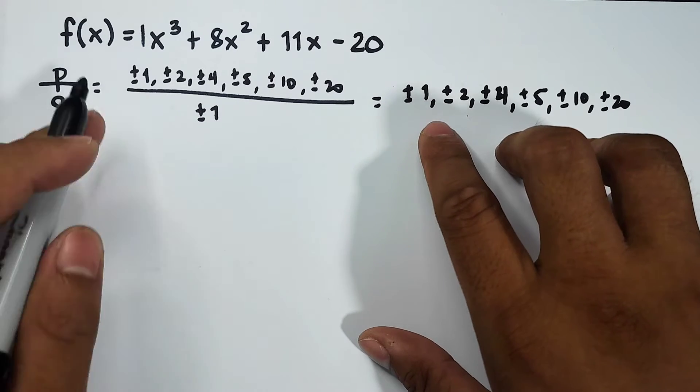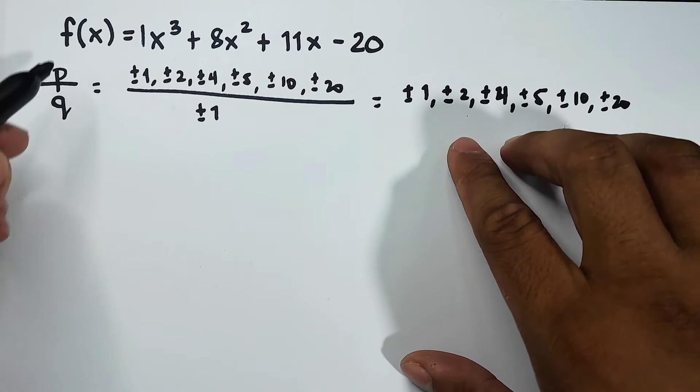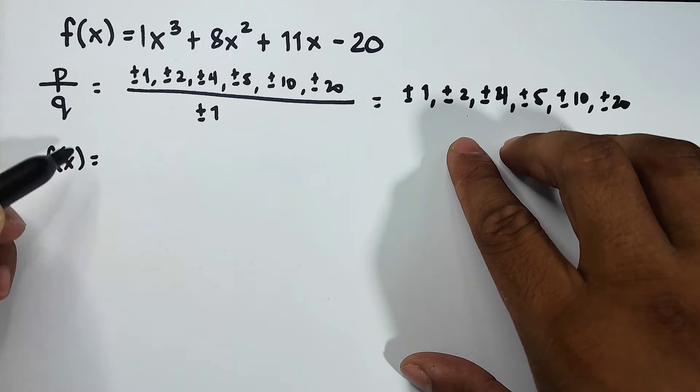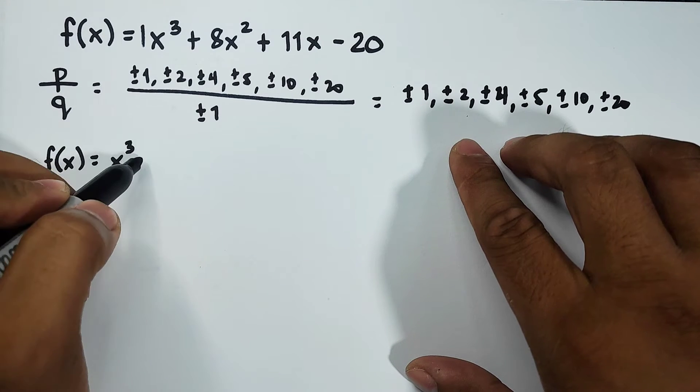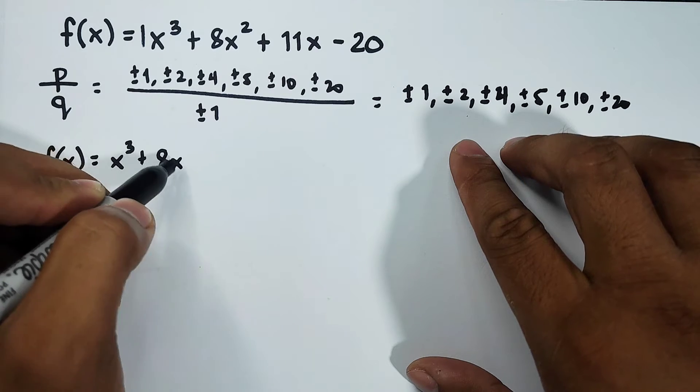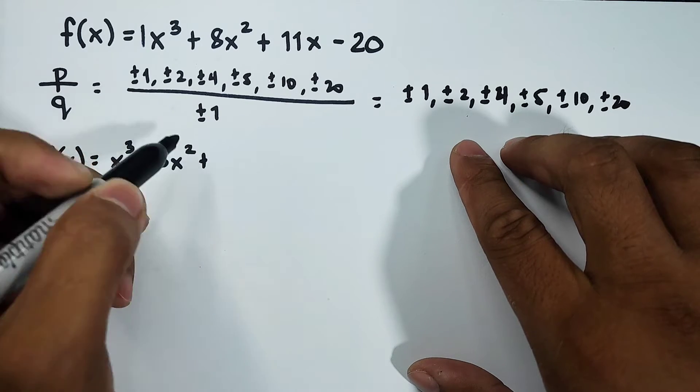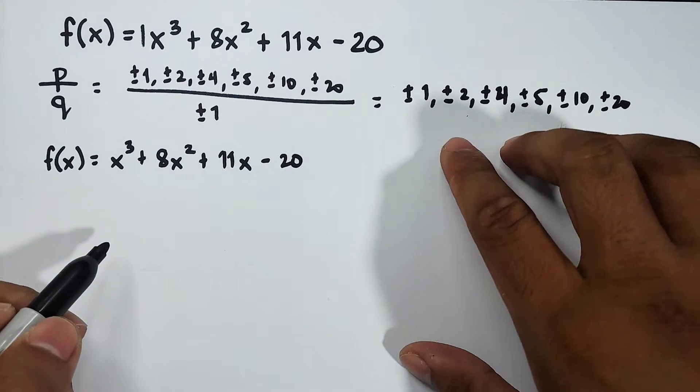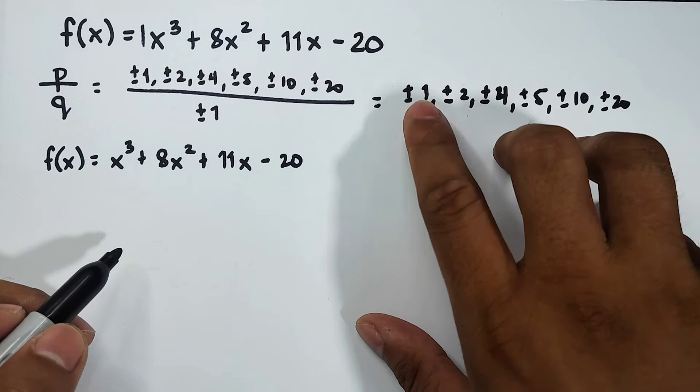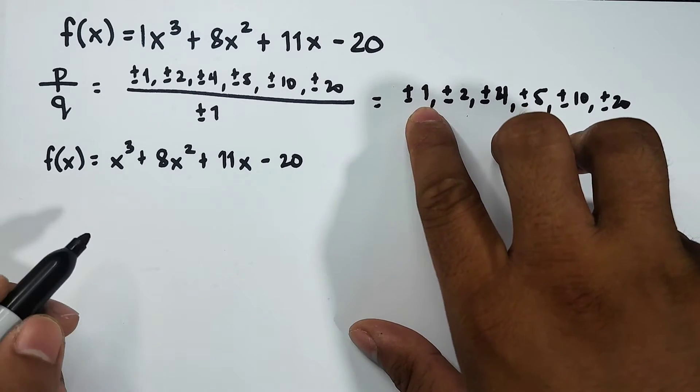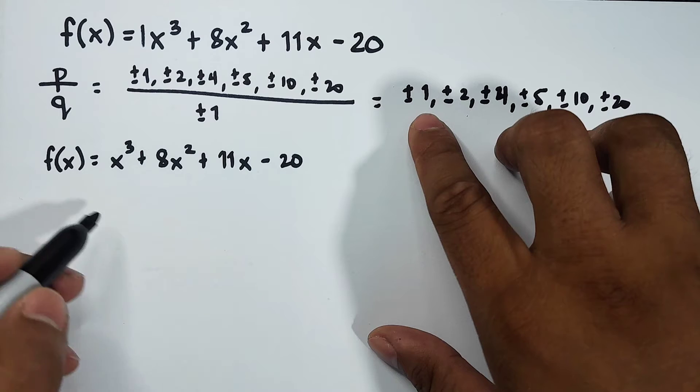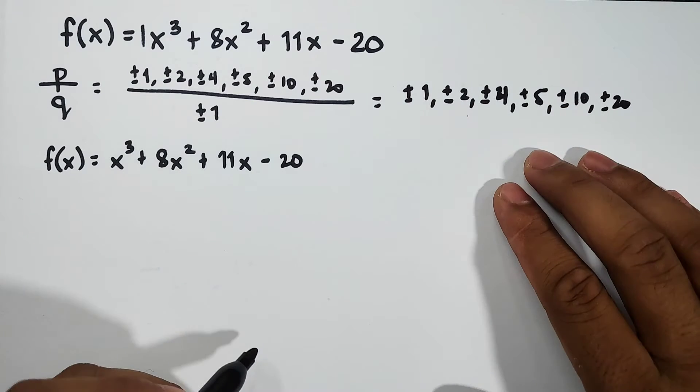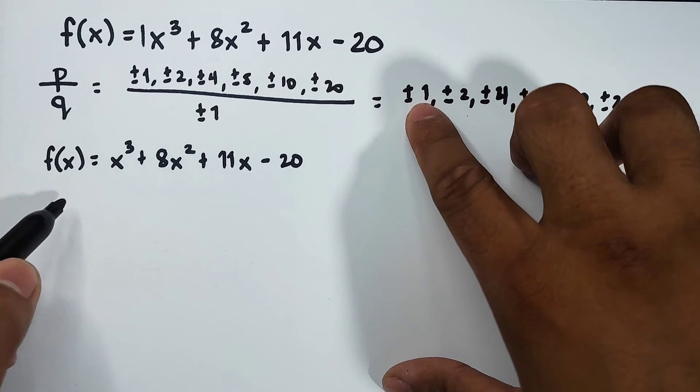First, get your function: f(x) = x³ + 8x² + 11x - 20. As you can see, we have these possible values. The first one we'll try is positive 1, because if we get zero as the value, automatically that one is the root of the polynomial function. So let me try positive 1.